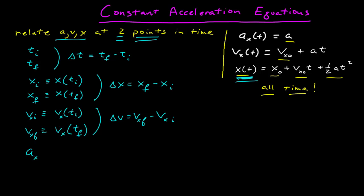The initial acceleration is just a, and the final acceleration is just a, because the one assumption we're using through all of this is that the acceleration is constant. These are how I define my terms at these two points in time, and now I want to create relationships between them that I can use to solve problems.